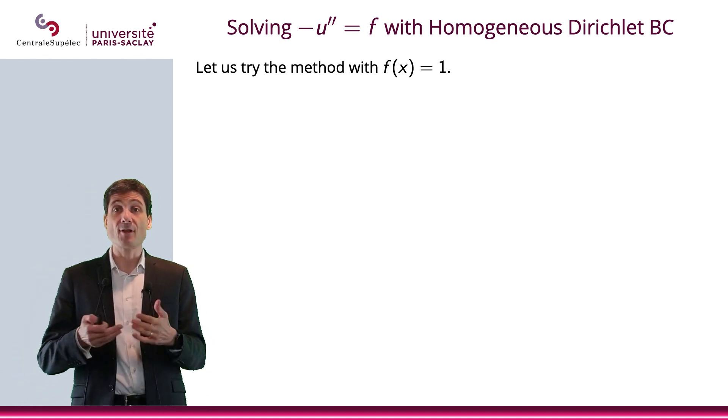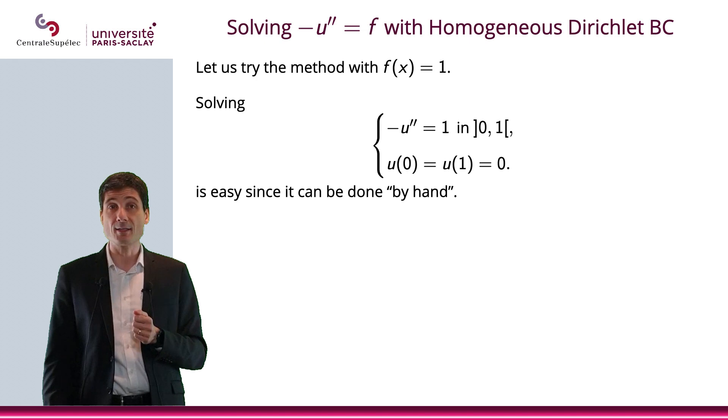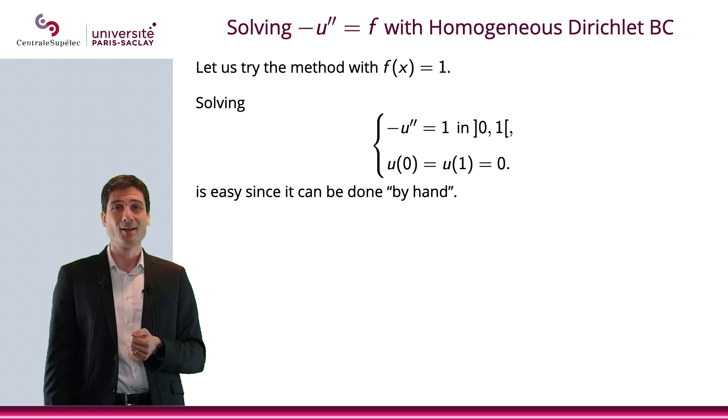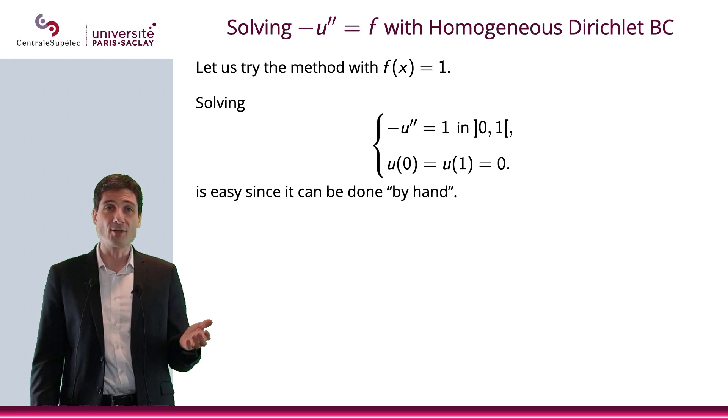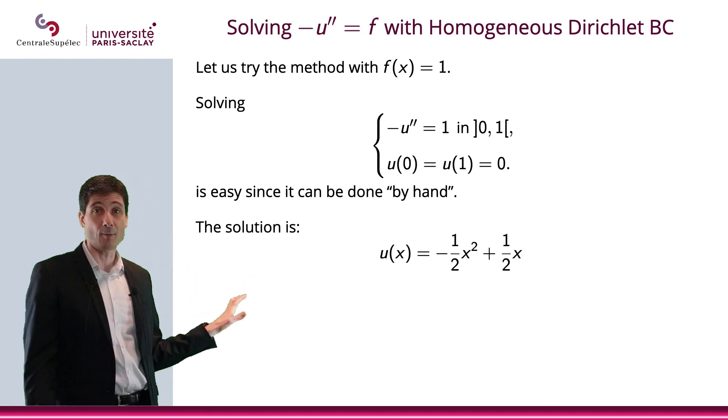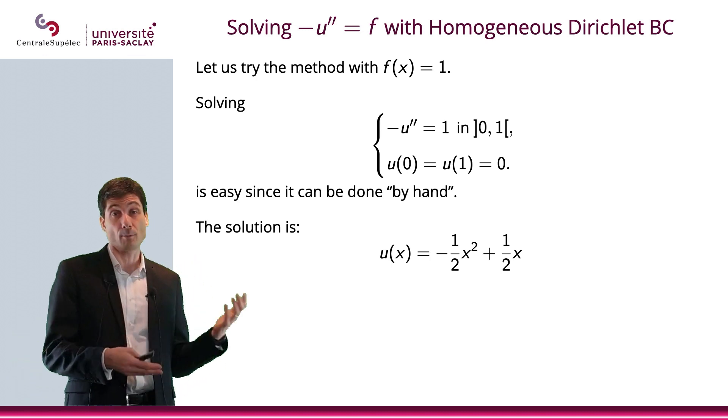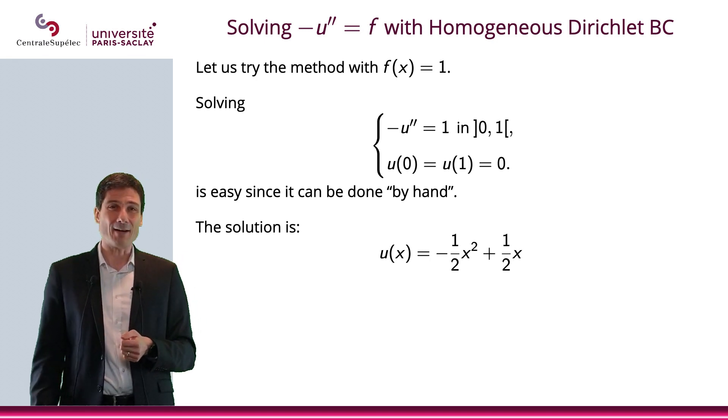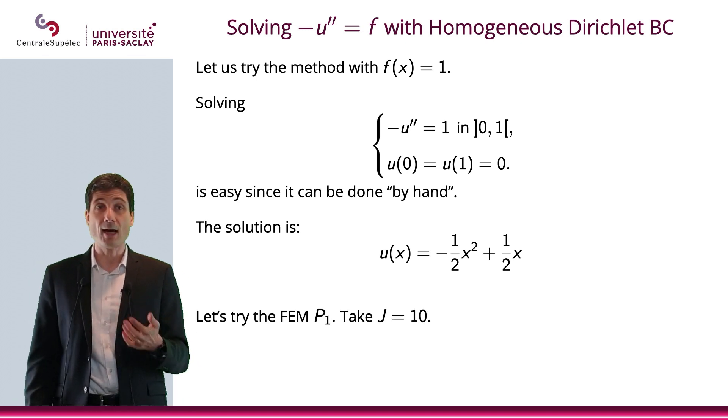All right, now that we have this, let's actually try the method with a given f. So I'm going to use f = 1, so I'm really going to solve this problem: -u'' = 1 in (0,1), u(0) = u(1) = 0, which can really be computed by hand. Obviously, you can find the anti-derivative of 1 pretty easily, and then you can find the second anti-derivative, adjust the constants so that u(0) = u(1) = 0. Obviously, you will find this solution. So normally, no one would compute this numerically. The reason why we're going to do this on this problem is because this will give us a way to compare our solution computed numerically and the solution we know to be the exact solution in this case. But again, obviously, in most of the cases, we don't know the exact solution. All right, so let's actually take J = 10 and let's try the finite element method.